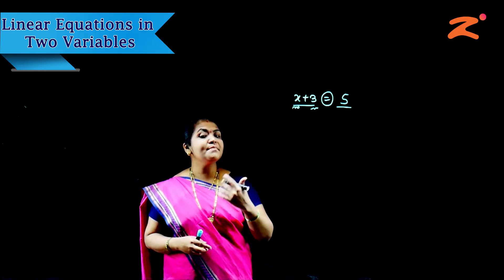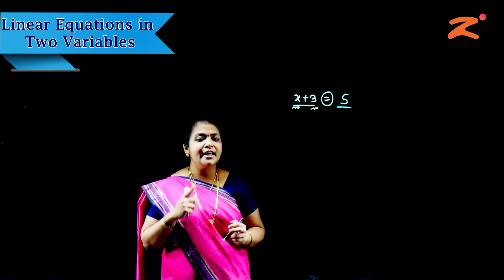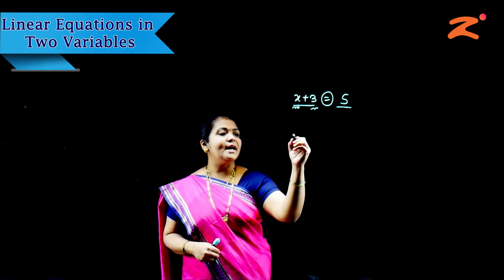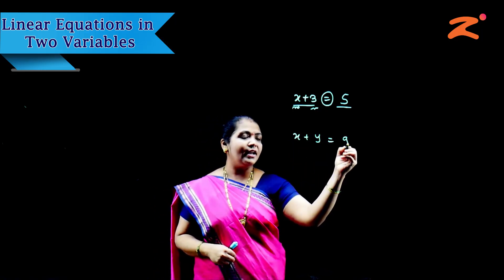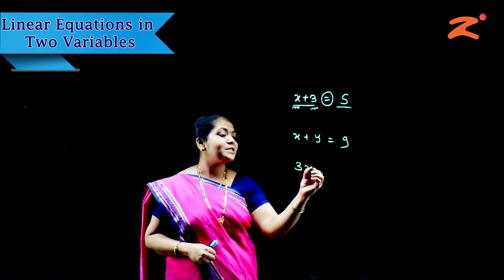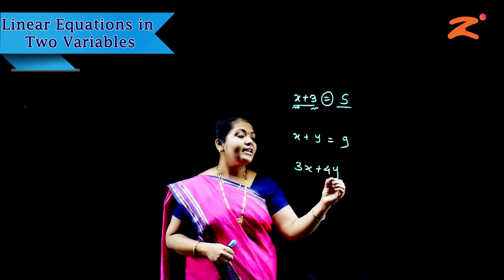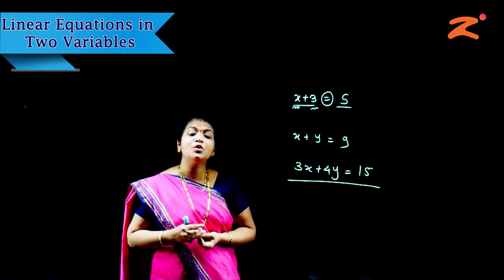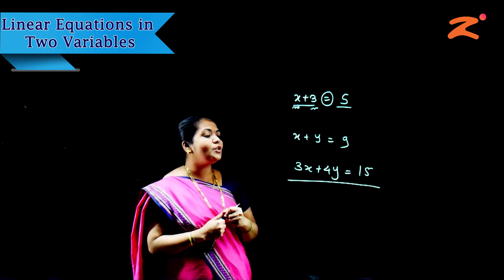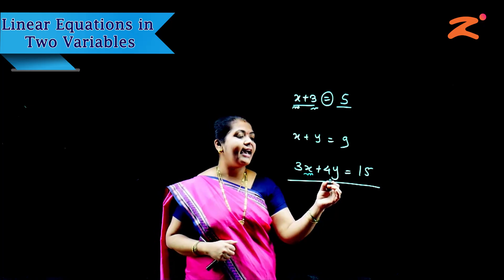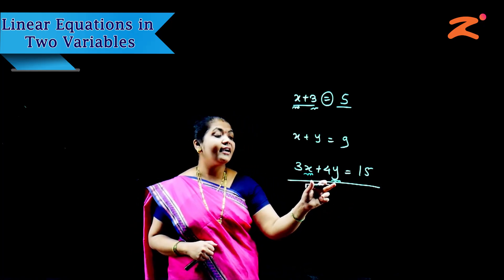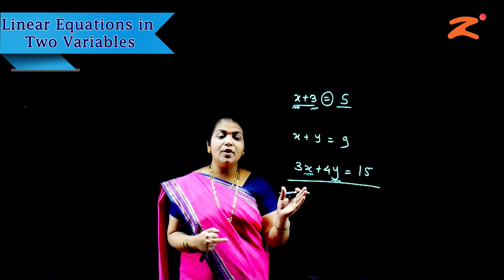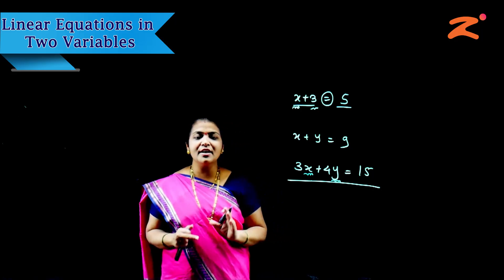Now you understand what is an equation and what is meant by a variable. What is meant by two variables? There should be two variables in the equation. For example, X plus Y equals 9, or 3X plus 4Y equals 15. In these expressions there are two variables — X and Y — so these are known as equations with two variables.